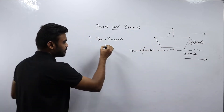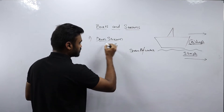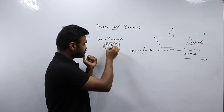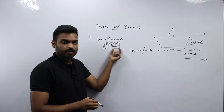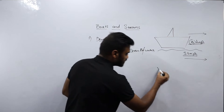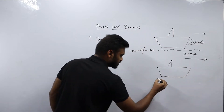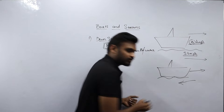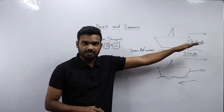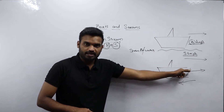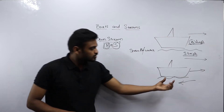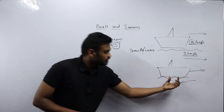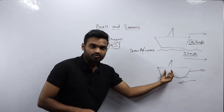In the second case, assume the boat is travelling in the forward direction and water is travelling in the backward direction — the opposite direction. Whenever water is travelling opposite to the boat, it will push the boat backwards, so the speed of the boat will be reduced. The total speed of the boat will become B minus S km per hour.